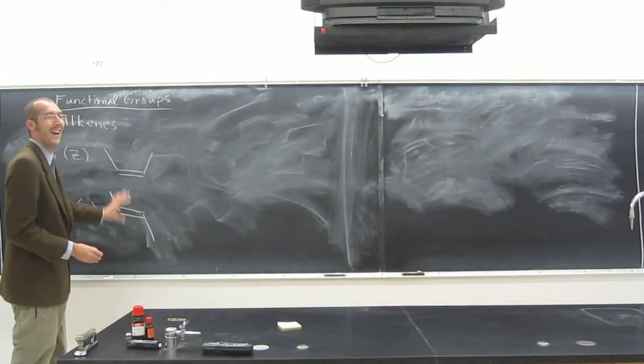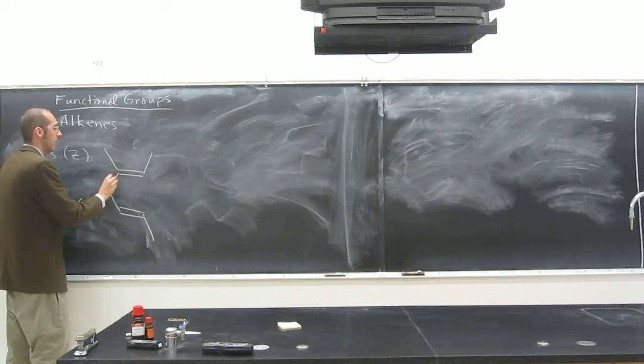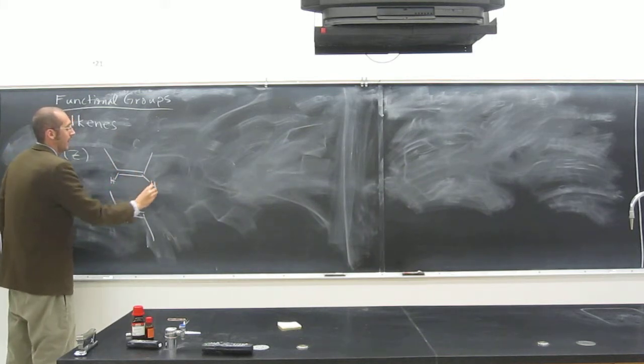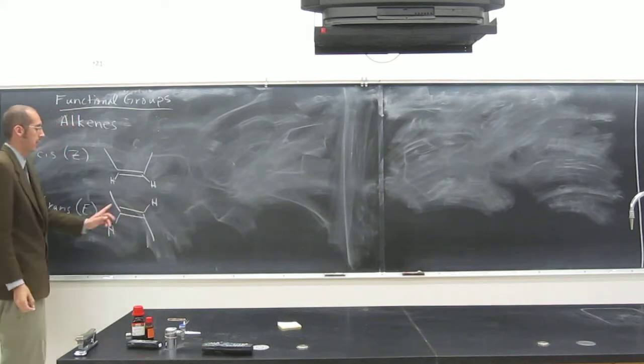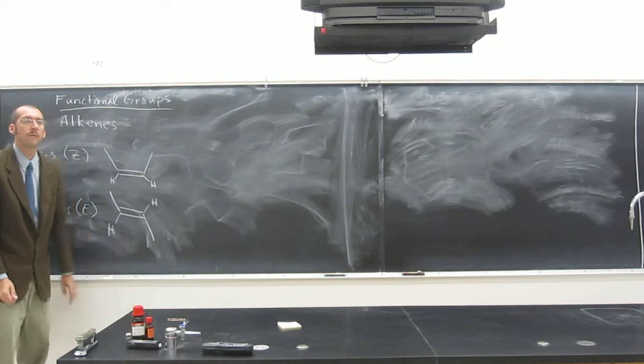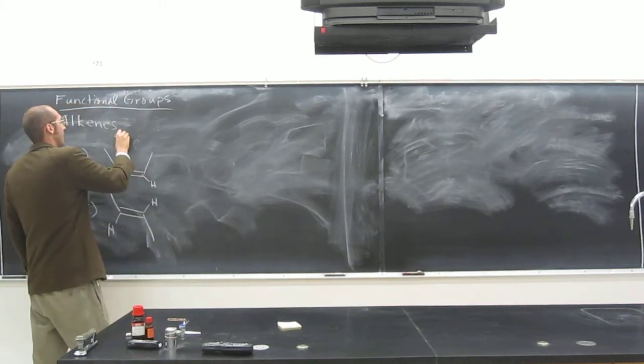These are both called disubstituted alkenes. Why? Because they've got two substituents that are carbon. So these are both disubstituted.